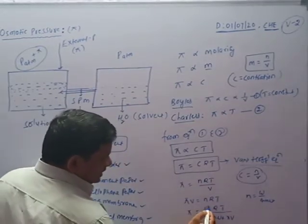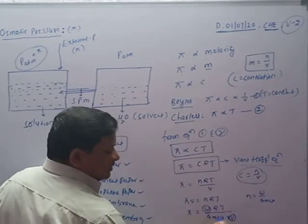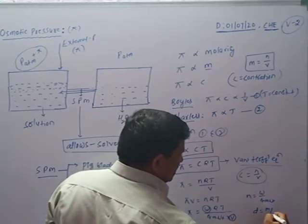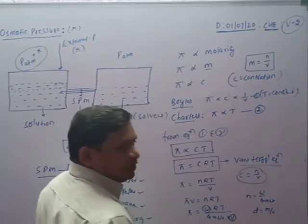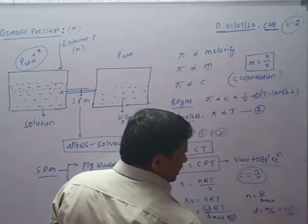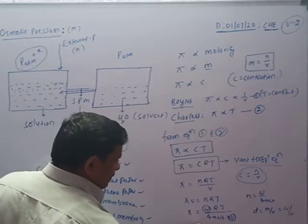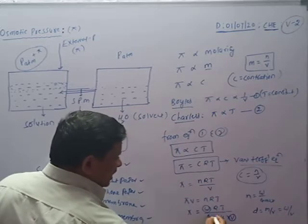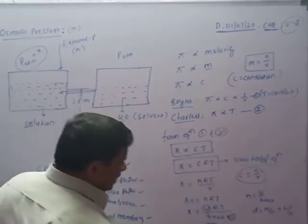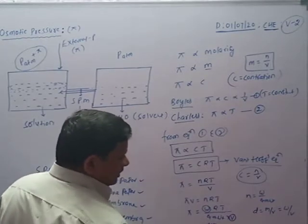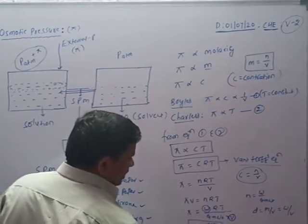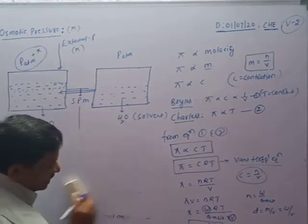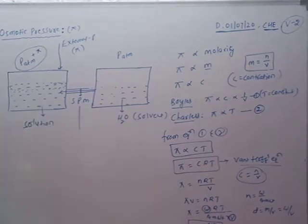Now listen carefully. W means weight, and weight is equal to mass. So mass divided by volume equals density, that is D equals mass by V. Substituting W by V as D, and denoting gram molecular weight with capital M, we get pi equals DRT by M.